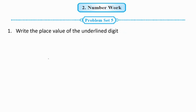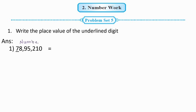First question: Write the place value of the underlined digit. First number is 78,95,210. The underlined digit is 7. 7 is in the 10 lakhs place, so the place value of 7 is 70 lakh.